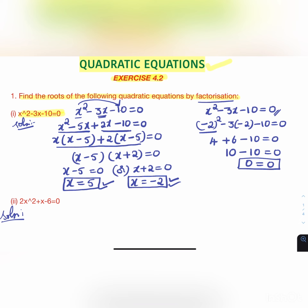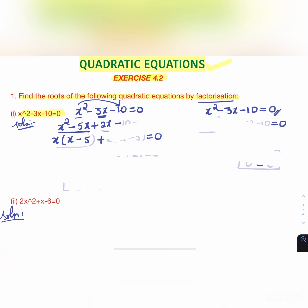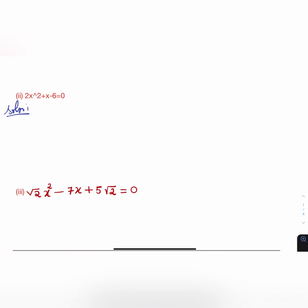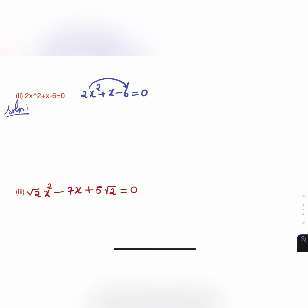Let us go to the second question: 2x² + x - 6 = 0. If we multiply the first and last terms, we get -12x². We need to split the middle term x.